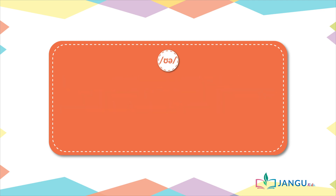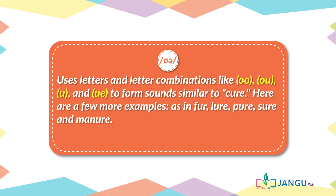The UE diphthong uses letters and letter combinations like OO, OU, U, and UE to form sounds similar to cure. Here are a few more examples: for, lure, pure, sure, and manure.